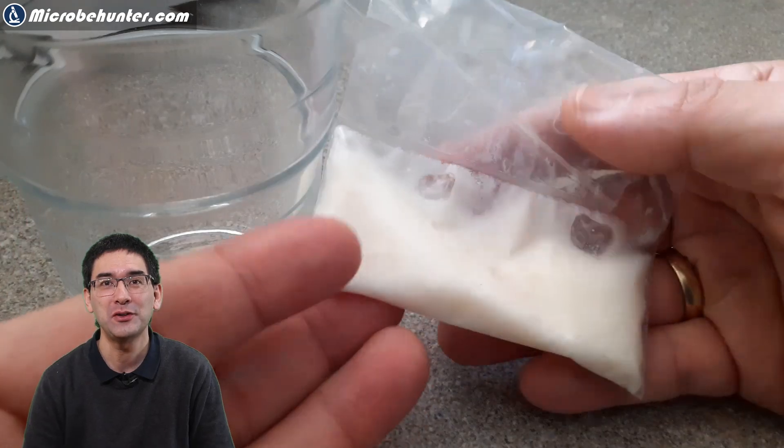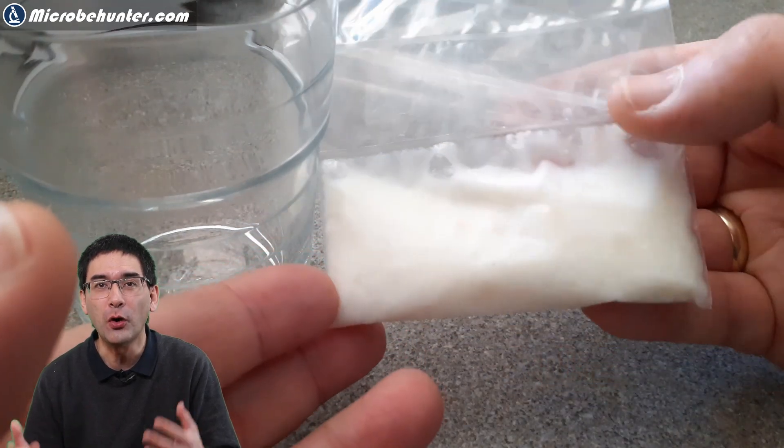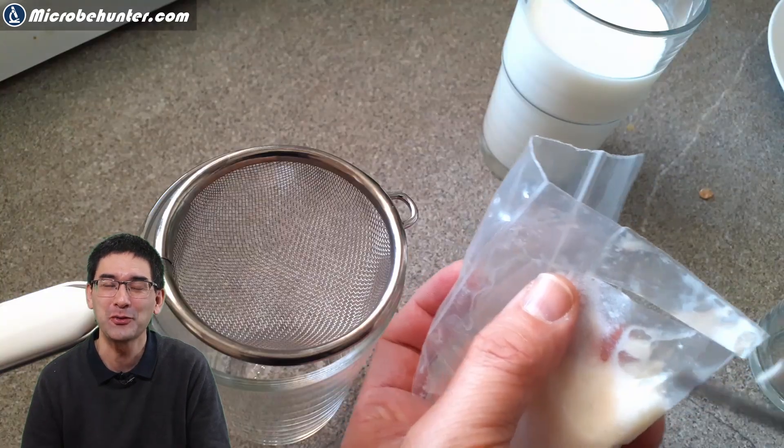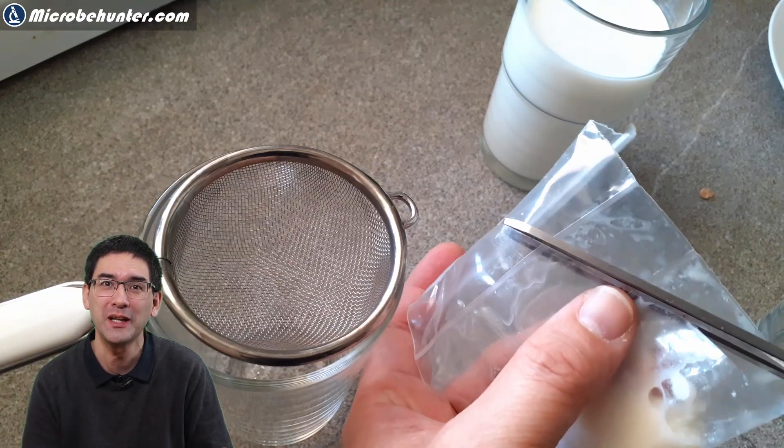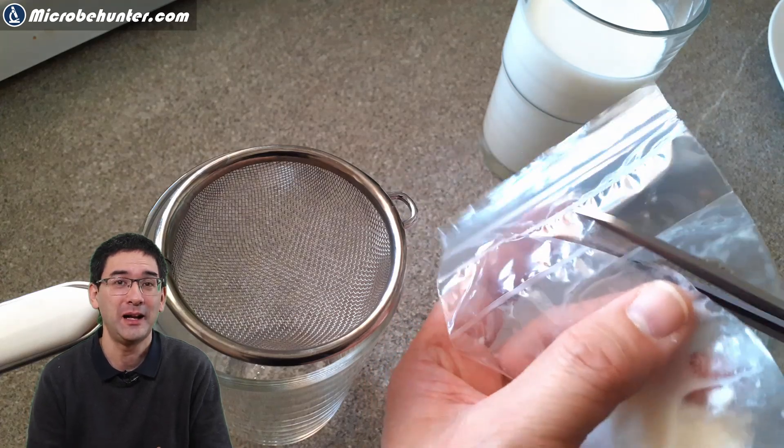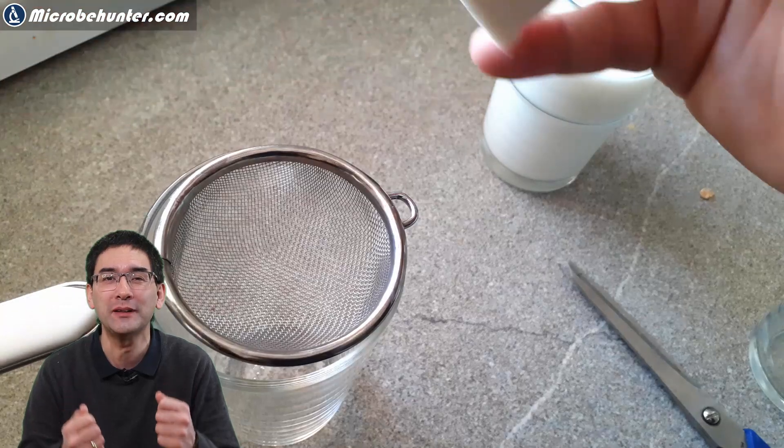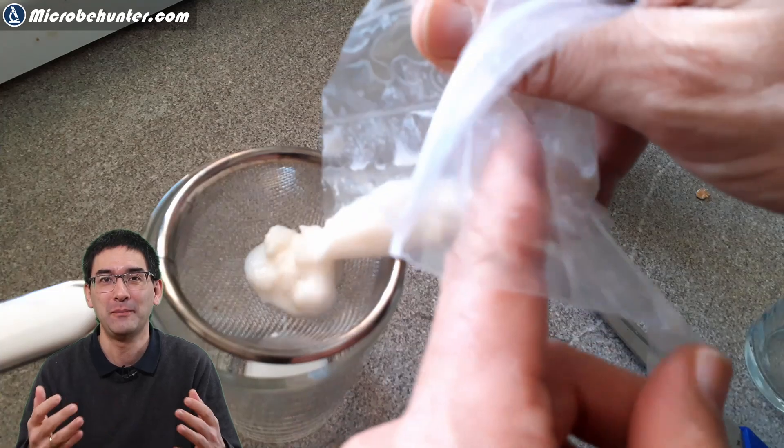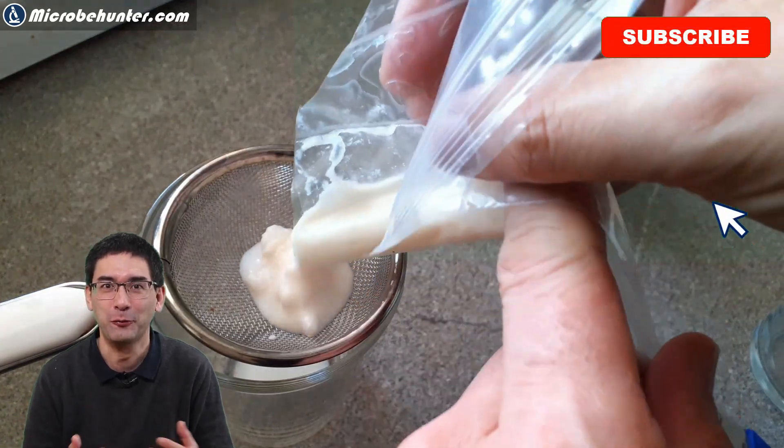The first thing that I wanted to do is to remove all of the milk that came with the kefir grains because I wanted to put it under the microscope and see the kefir grains alone. Those of you who have already made kefir before are probably going to scream right now and say, don't do that. Don't put the kefir grains into a metal sieve. I didn't have a plastic one, unfortunately.